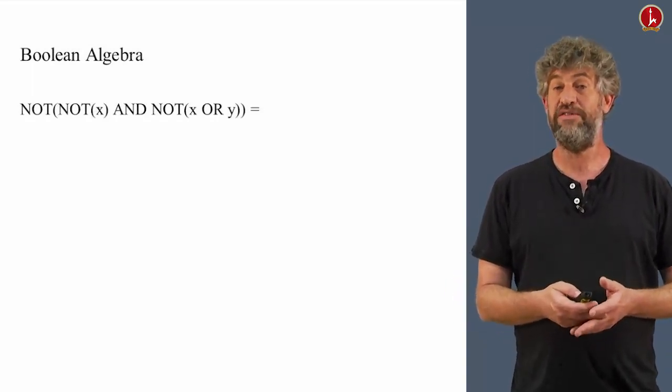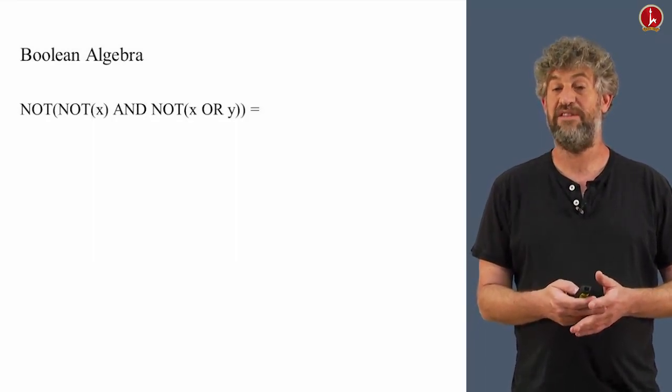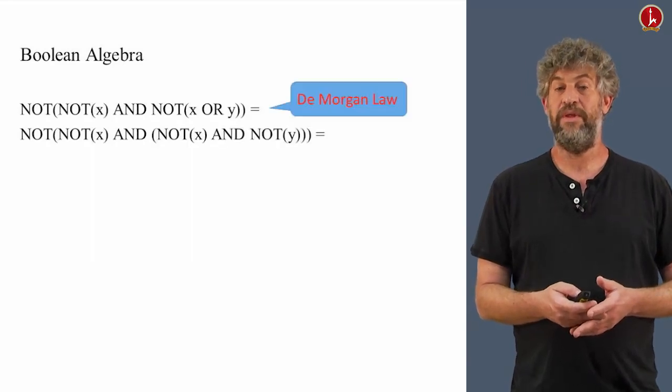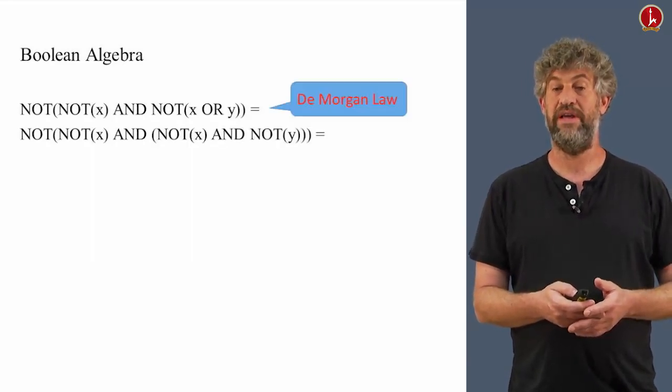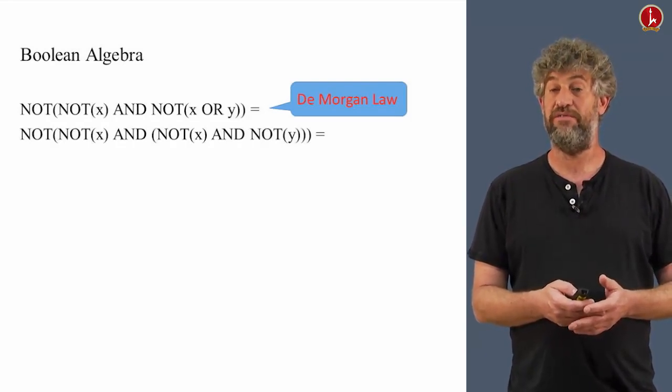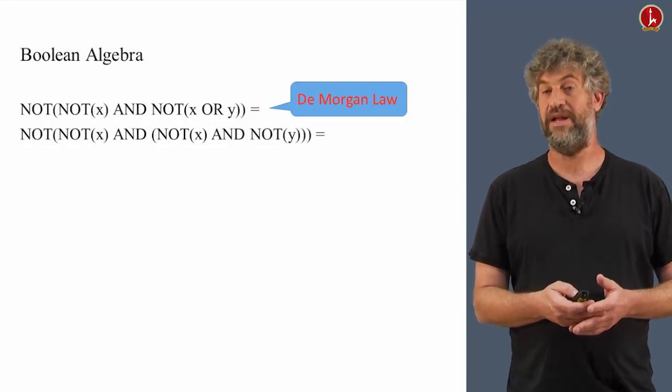For example, the first thing we can do here is look at the second part, at the last sub-expression, NOT(x) OR y. We can use De Morgan law here and basically convert it to NOT(x AND NOT(y)). Now, if you look what we have here, we can use the associative law. Because we have NOT(x) AND NOT(x) AND NOT(y), we can change the order of doing the AND.